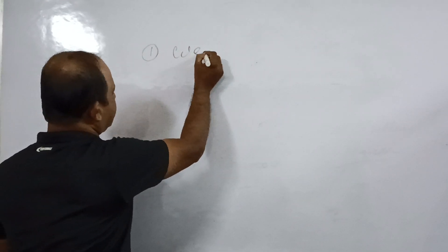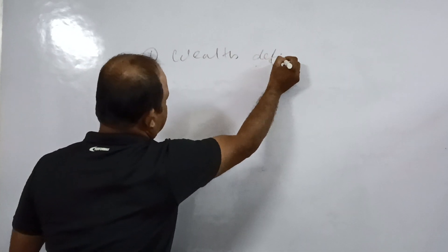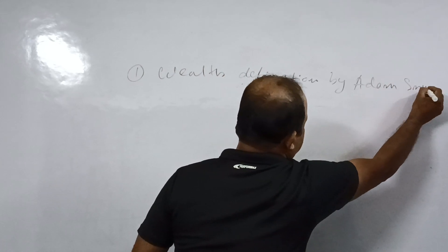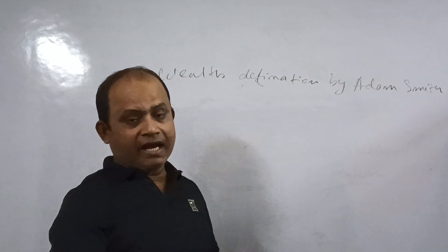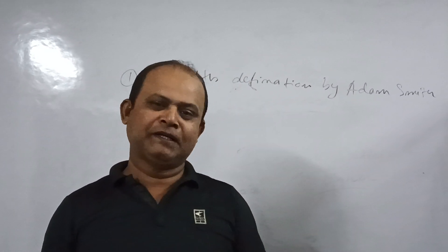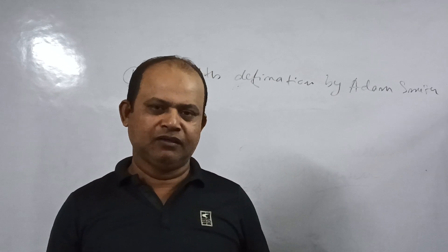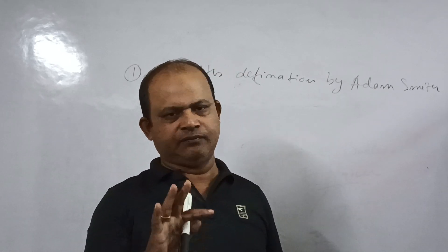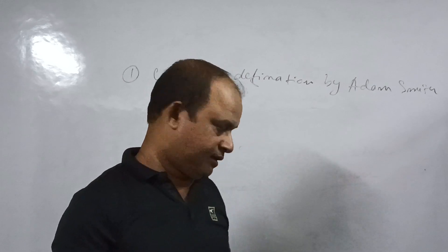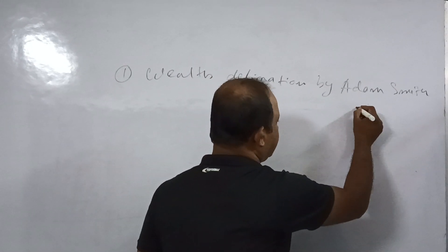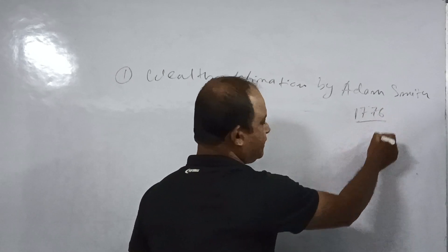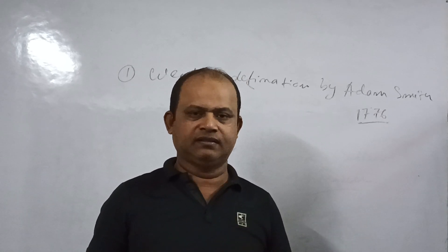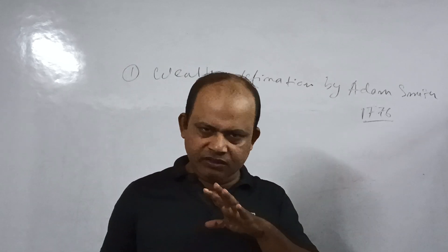The first one is the Wealth Definition, given by Adam Smith, who is considered the father of economics. Adam Smith first wrote the book 'An Inquiry into the Wealth of Nations,' which is considered the first scientific book of economics. He wrote that book in 1776, and he said that economics is a study about the wealth of a nation.